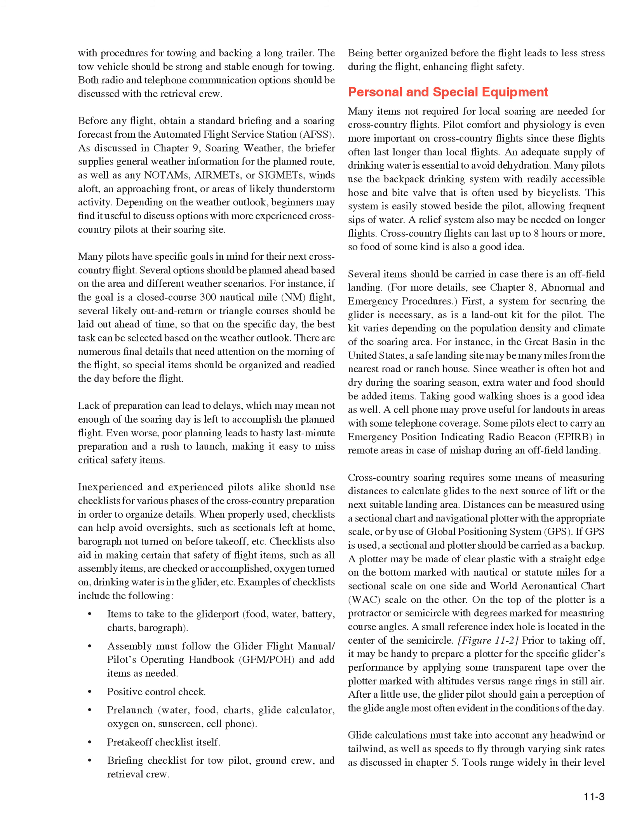Several items should be carried in case of an off-field landing. A system for securing the glider is necessary, as is a land-out kit for the pilot, varying by population density and climate. In remote areas like the Great Basin, a safe landing site may be many miles from the nearest road, so extra water, food, and good walking shoes are advisable. A cell phone may prove useful, and some pilots carry an Emergency Position Indicating Radio Beacon (EPIRB) in remote areas.